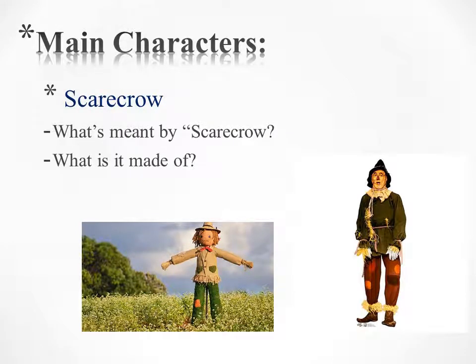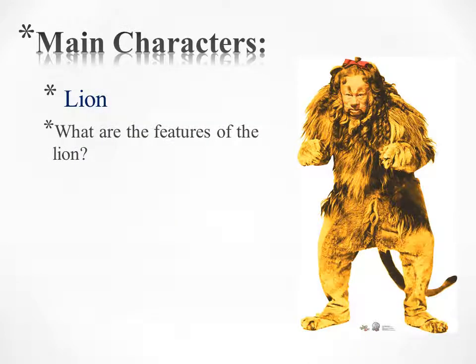A scarecrow — what is meant by scarecrow? A scarecrow is a fake person farmers used to scare birds in a field. It is made of straw, a bunch of dried wheat or grass. What are the features of the lion? The lion is usually known as the king of the beasts. But what about this one? We'll see.